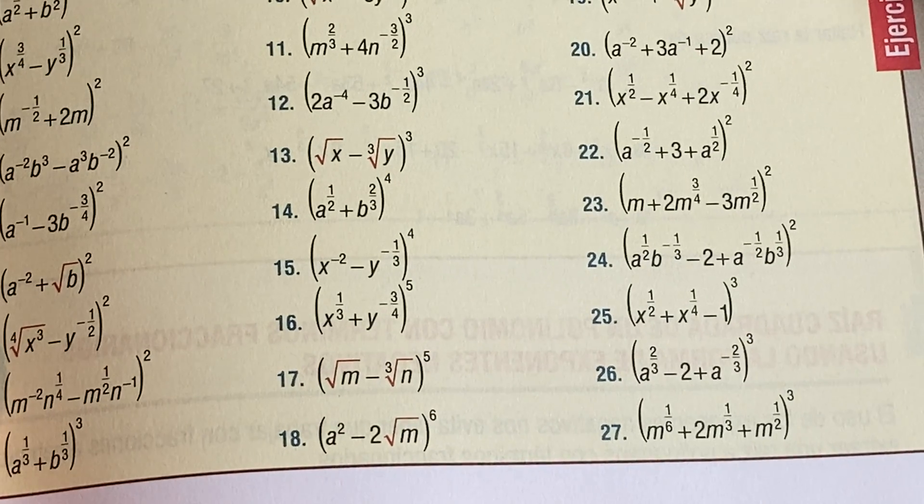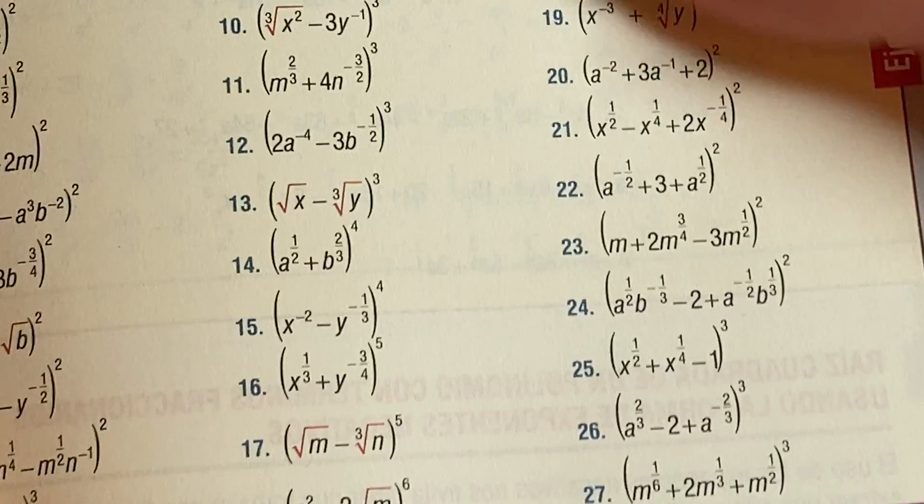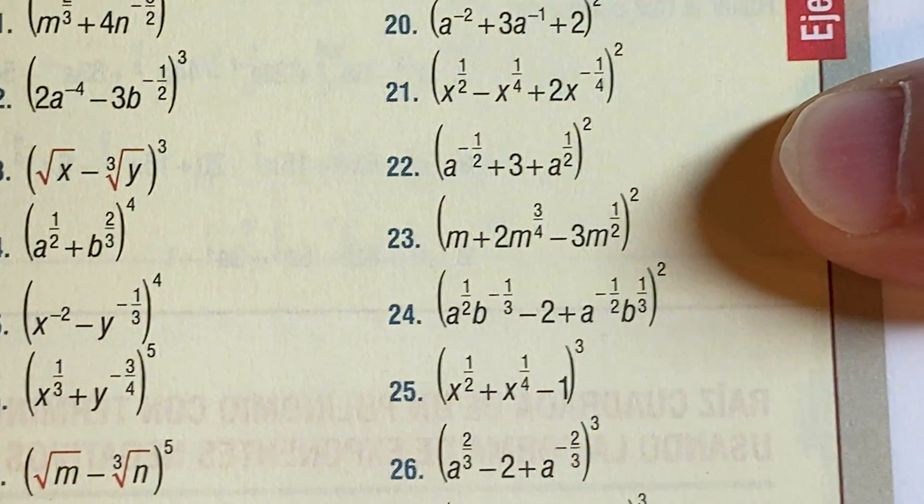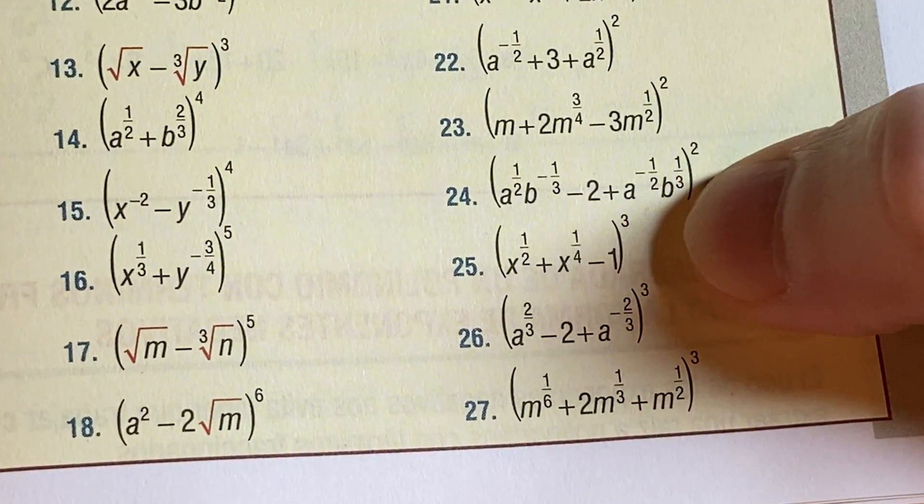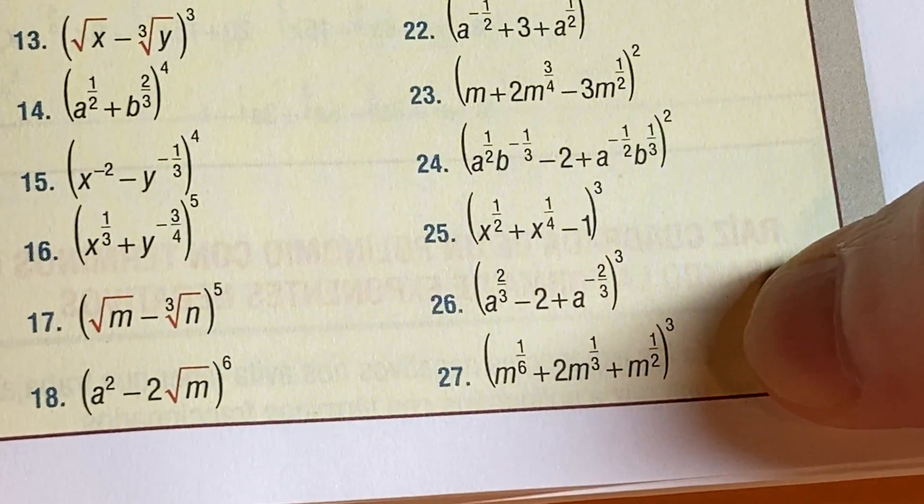But look, you get down to 27, and you've got three terms. Look at 24 there. Well, that's only squared, but look at 25. Or look at 26, or 27. So it's getting a little bit more complicated.